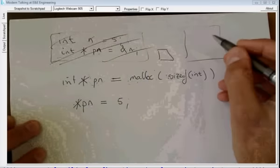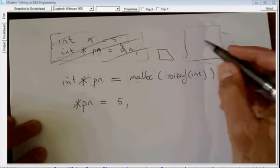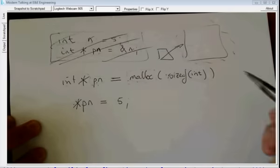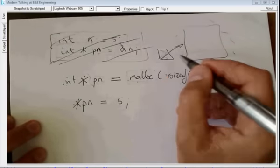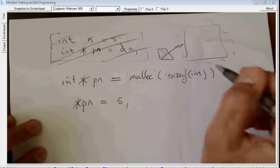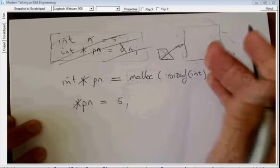You have a pointer and the only way you can get access to this block of memory is through the pointer that points there. If you change this value inadvertently or otherwise you can't access that memory anymore. You don't have a handle on it. You don't know where it was stored.